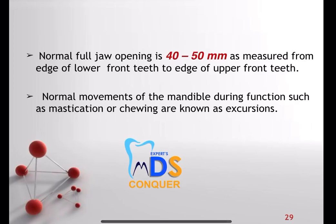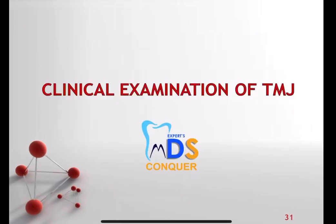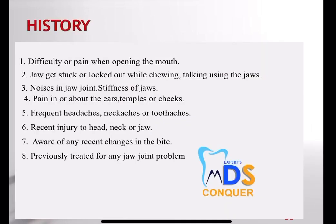The normal mouth opening is around 40 to 50 mm, measured from the edge of the lower front teeth to the edge of the upper front teeth. The TMJ is used for elevation and depression of the jaws, and also for protrusion, retrusion, and lateral movements. A brief description of the hinge movement and the glide movement is sufficient for this section.